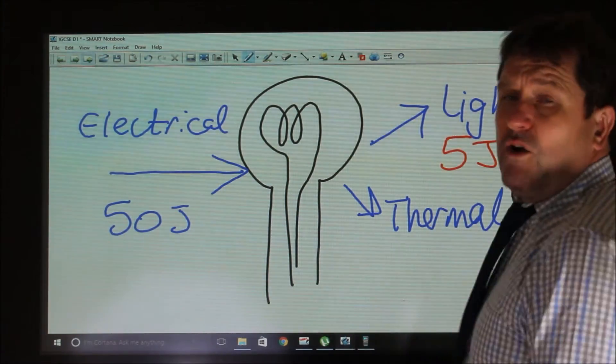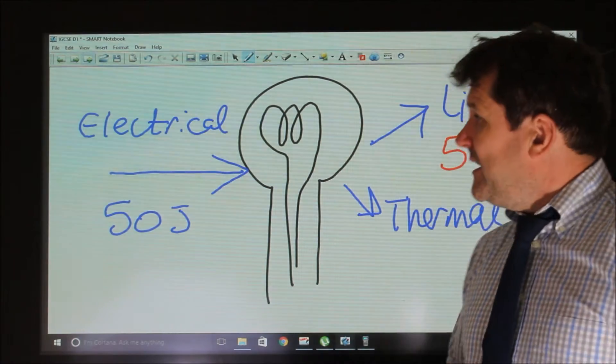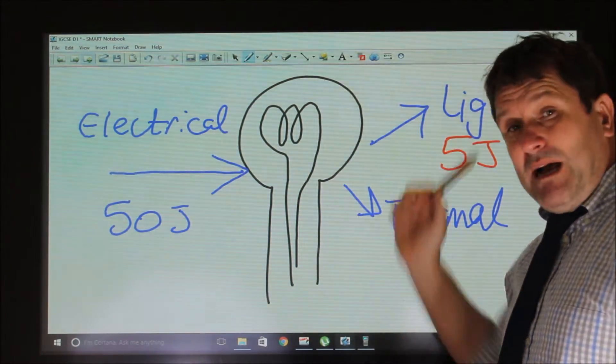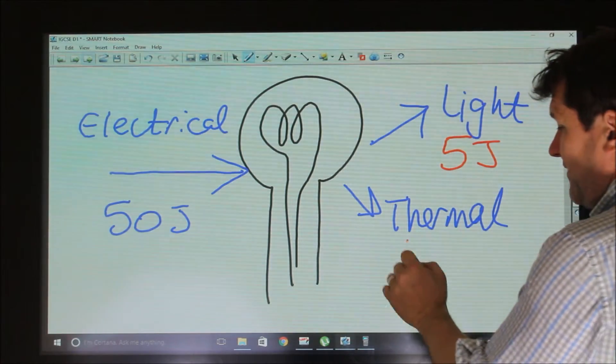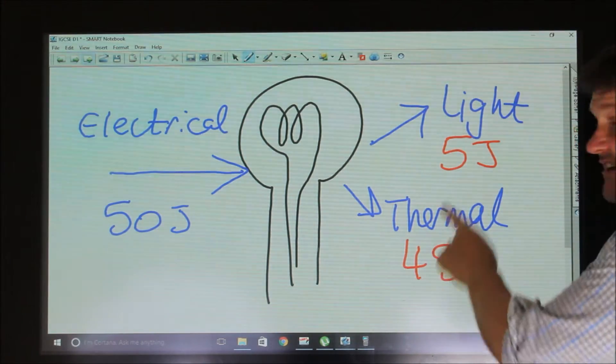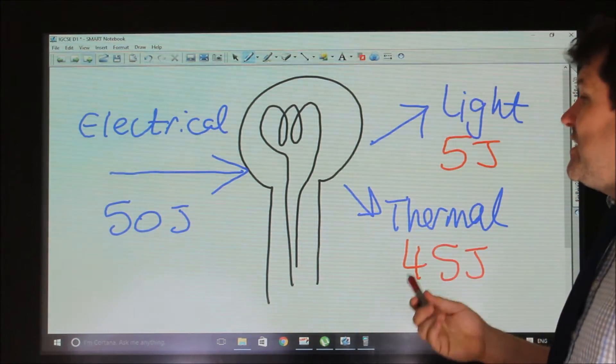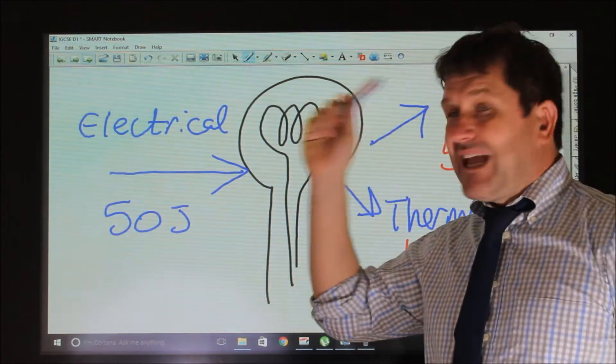then we know by the law of conservation of energy, that whatever energy goes into a machine, the same energy must come out. So therefore, we must have 45 joules, because 45 plus 5 is 50. We must have 45 joules so that the energy out equals the energy in.